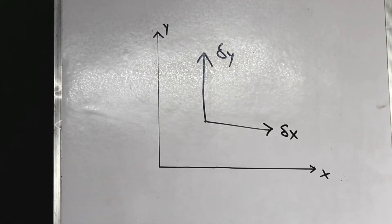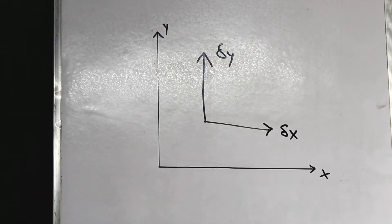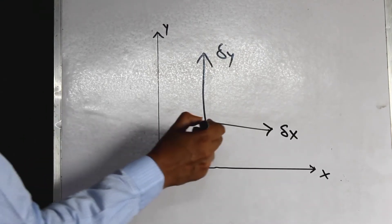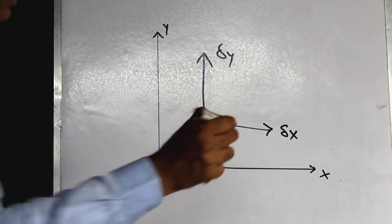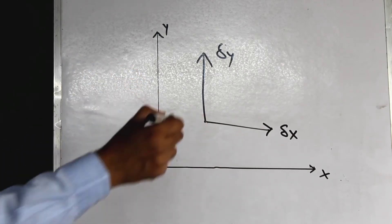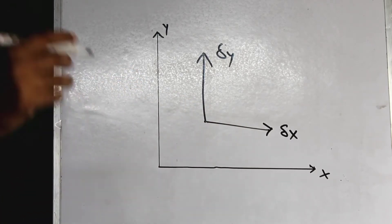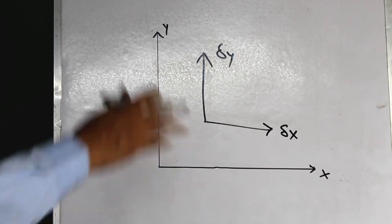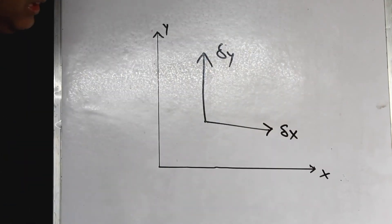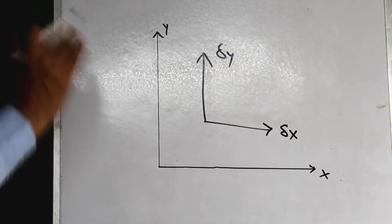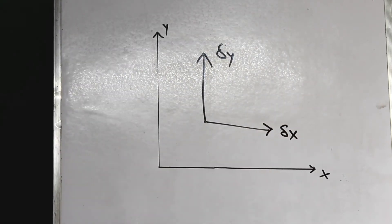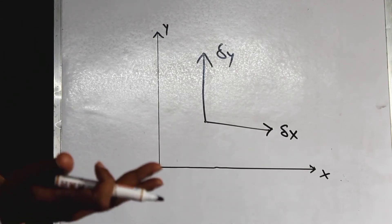But how about the translational degree of freedom along the z-axis? Well, I have to draw it like this. This is something that I cannot draw on the board, which means that this degree of freedom is not in this plane and thus it is an out-of-plane degree of freedom.